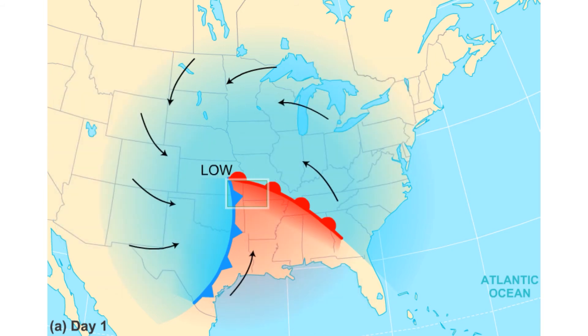Let's look at where precipitation will form. Note that precipitation forms ahead of the warm front, but directly over the cold front.